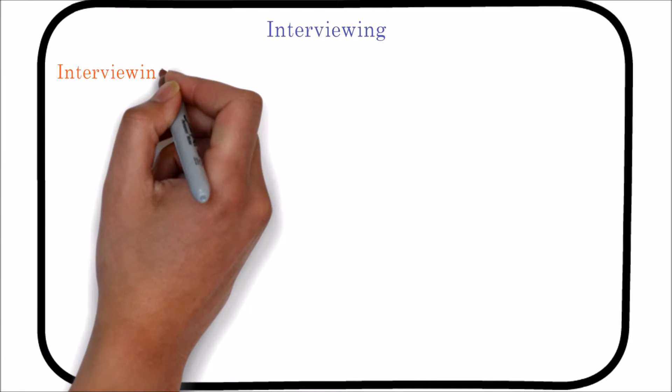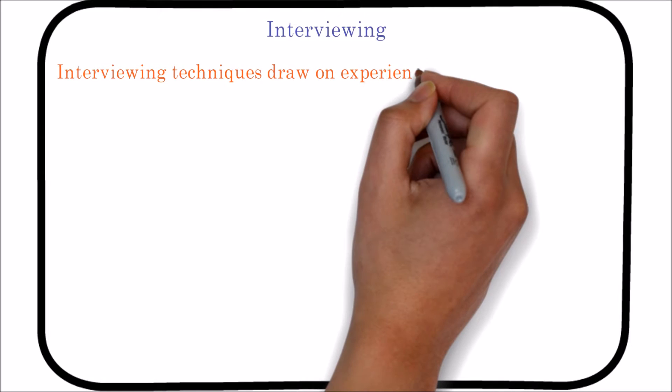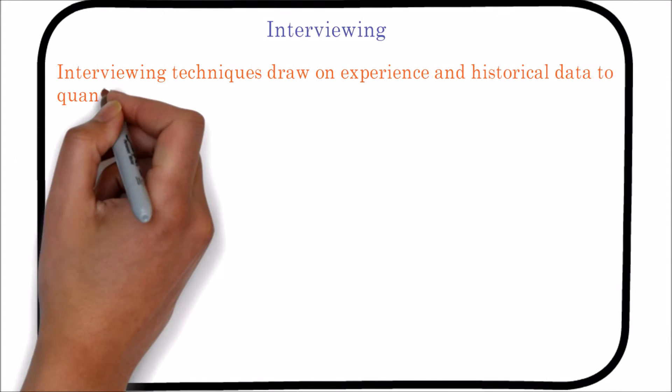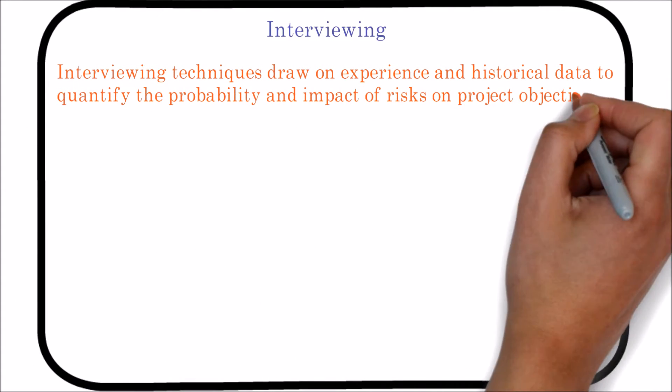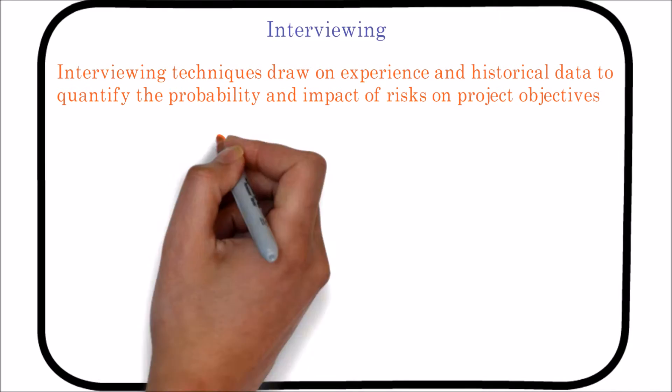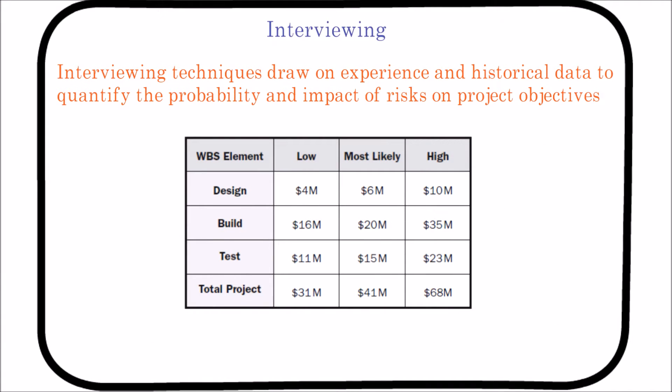First is interviewing. Interviewing techniques draw on experience and historical data to quantify the probability and impact of risks on project objectives. The information needed depends upon the type of probability distributions that will be used. For instance, information would be gathered on the optimistic, pessimistic, and most likely scenarios for some commonly used distributions. Here is an example of three-point estimates for cost.